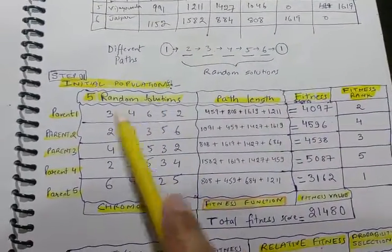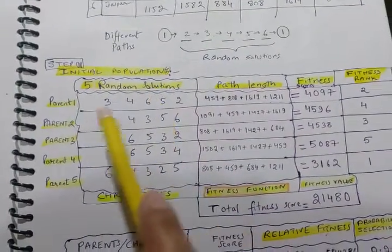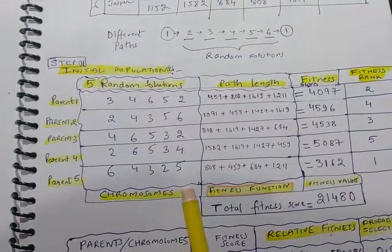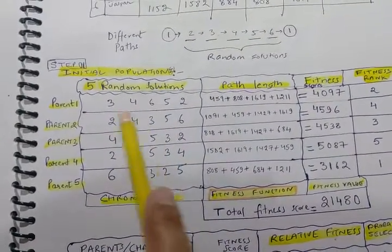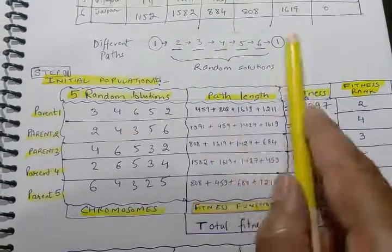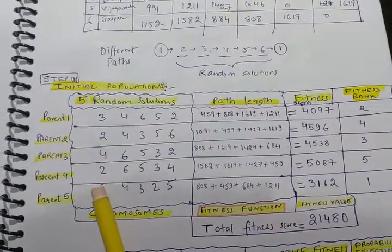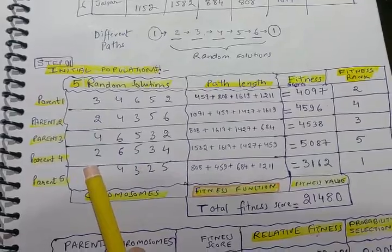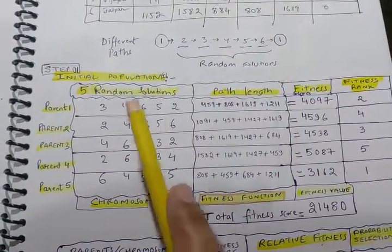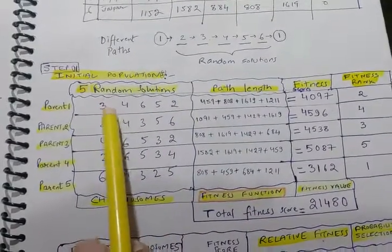Let us take some general permutations and begin from this set of parents or random solutions or chromosomes, whatever you want to call them. These traversing paths do not include the city of starting and stopping points because it is common to all, but when we calculate the total tour length, we will have to populate one on each side.